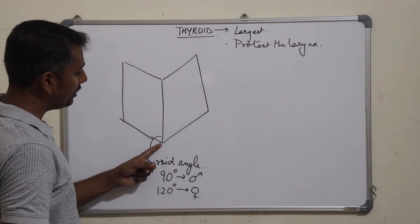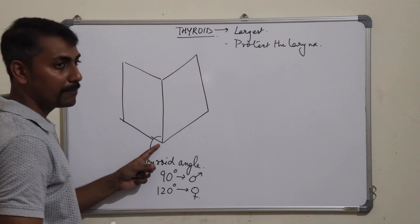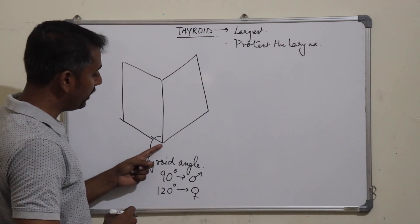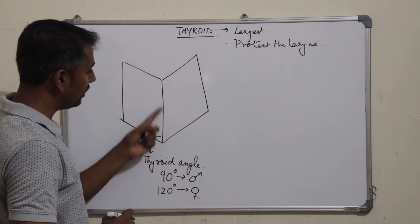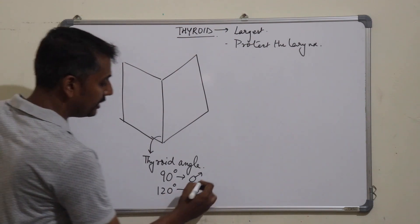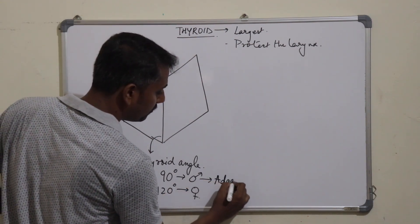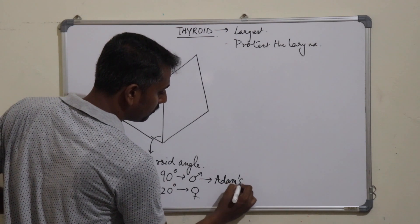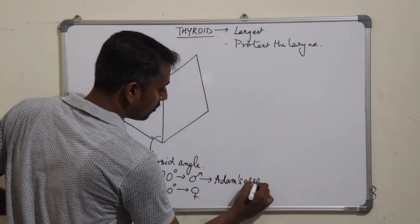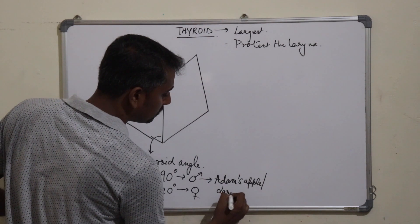The thyroid angle is more acute in males compared to females. Therefore, in males this angle is more prominent and is known as Adam's apple or laryngeal prominence.